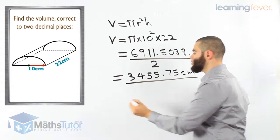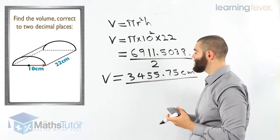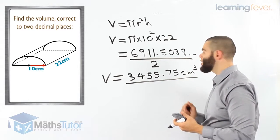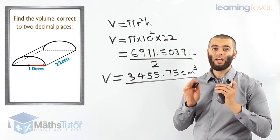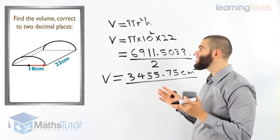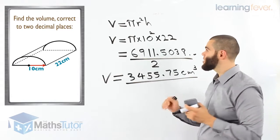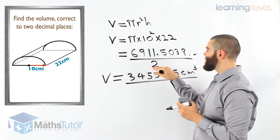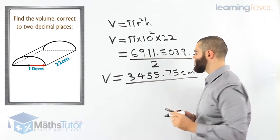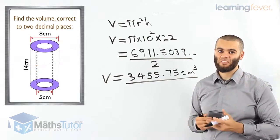Dividing by two gives us 3,455.75 cubic centimetres. The volume of this half cylinder is 3,455.75 cubic centimetres. We noticed it is a cylinder that's been cut in half, so we worked it out as a normal cylinder and then divided by two.